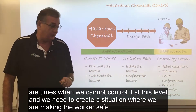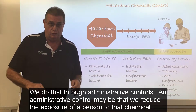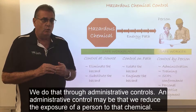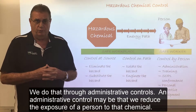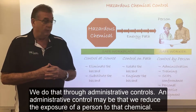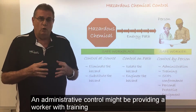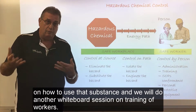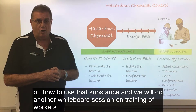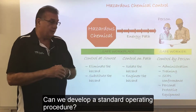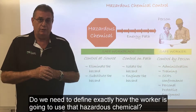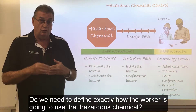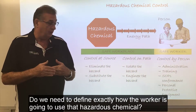We do that through administrative controls. An administrative control may be that we reduce the exposure of a person to that chemical. An administrative control might be providing a worker with training on how to use that substance — we will do another whiteboard session on training of workers. Can we develop a standard operating procedure? Do we need to define exactly how the worker is going to use that hazardous chemical?